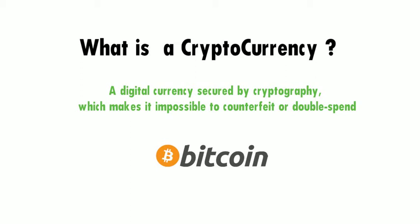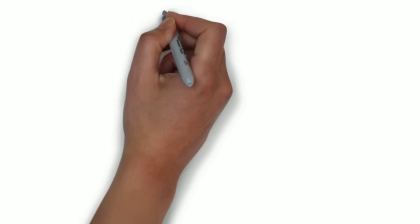Now that we know what a cryptocurrency is, let us understand the difference between 8 different types of cryptocurrencies.